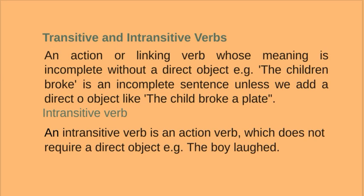Transitive and Intransitive Verbs. A transitive verb is an action or linking verb whose meaning is incomplete without a direct object. For example, 'The children broke' is an incomplete sentence unless we add a direct object, like 'The child broke a plate.' This is a transitive verb.